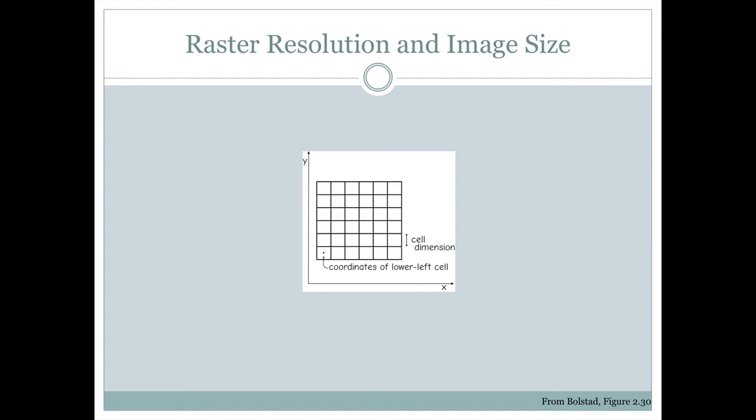When we're doing multi-scale web mapping or any sort of multi-scale mapping, we should be aware of raster resolutions and how big the resulting images are going to be. So once again, raster is just a series of grid cells.